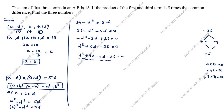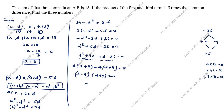We group the terms: take D outside from the first group giving D(D plus 9), and minus 4 outside from the second group giving minus 4(D plus 9), so the result is equal to 0. Therefore D minus 4 into D plus 9 is equal to 0. So D minus 4 equals 0, giving D equals 4, or D plus 9 equals 0, giving D equals minus 9.